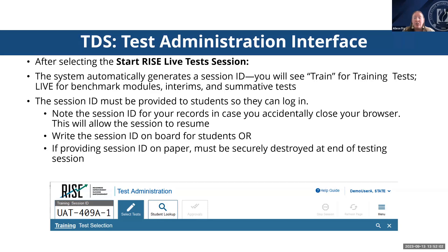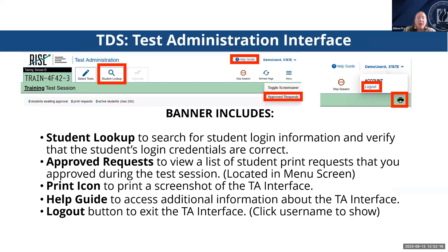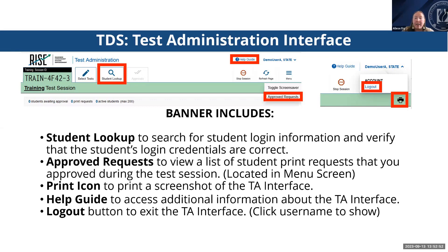When students start signing into the test session, the Approvals button will appear next to the session ID. Once you approve students, the session table appears in the center of the screen displaying students' testing progress. The banner at the top has had a bit of a facelift recently. The student lookup tab is to search for student login information and verify credentials are correct. You can click Approved Requests to view a list of students' print requests you've approved during the session, click Print Session to print a screenshot of the screen, access the Help Guide link, or click the Logout button under your account.